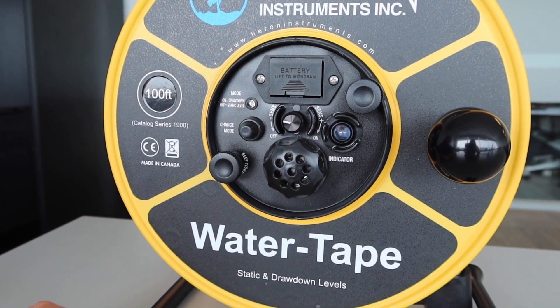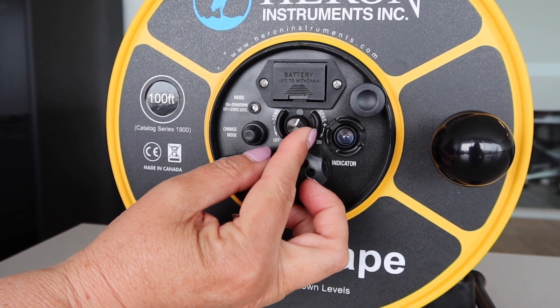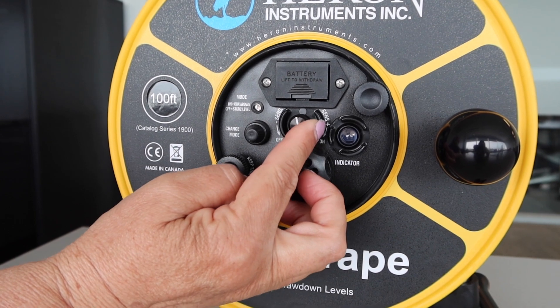If there is any cascading water in the well, simply adjust the sensitivity dial until you get a clear, crisp, consistent signal when the probe touches the water.